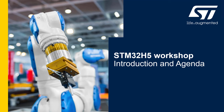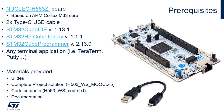Let's start with the hardware prerequisites. For this MOOC we're going to be using the Nucleo H563ZI — this is the board embedding the STM32 H5. You're going to need two USB Type-C cables. The first cable connects on the top side of the board to the embedded ST-Link, which is in turn connected to the main target, the STM32 H5. This first cable will power the board and give you the ability to program and debug the STM32 H5 located in the center of the board.